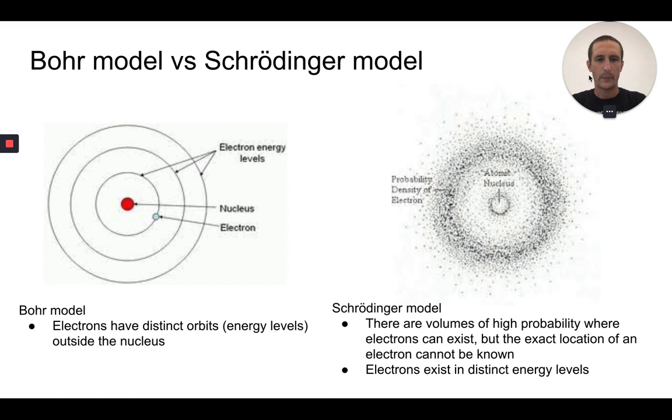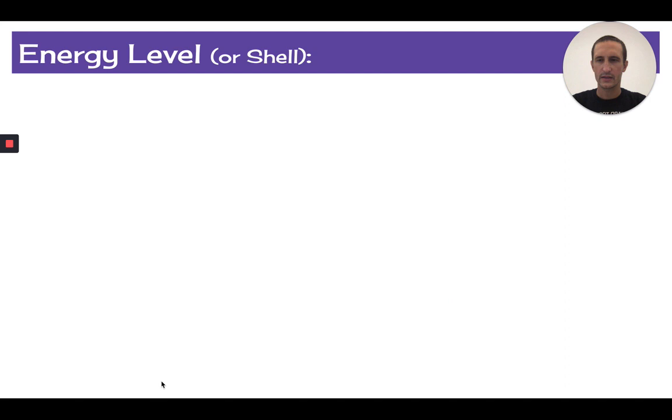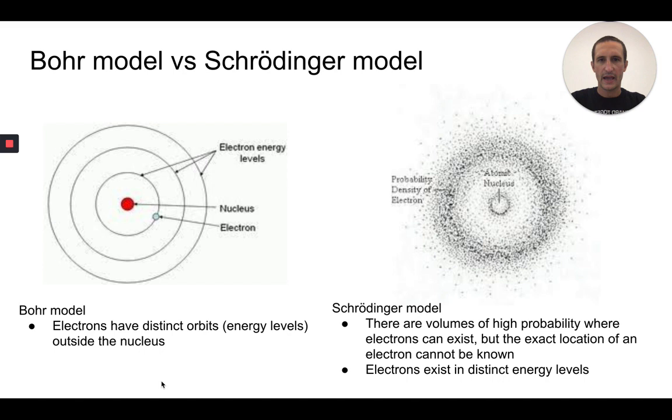The Schrödinger model is a bit different in that it describes only volumes where there are a high probability that electrons can exist. The exact location of electrons cannot be known. This is one of the tenets of the Schrödinger model. One similarity between Bohr and Schrödinger is that electrons still have distinct energy levels. Comparing and contrasting those two things is an important place to start. We are going to be looking specifically at this Schrödinger model of the atom.